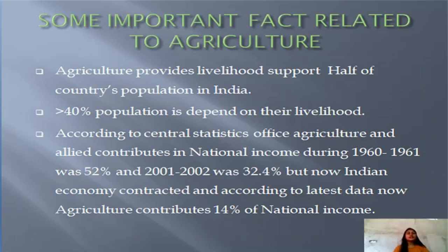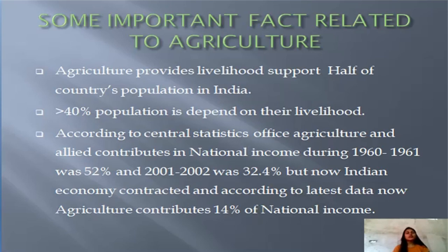Some important facts: agriculture provides livelihood support to half the country's population in India, and more than 40 percent of the population depends on it for their livelihood. According to the Central Statistics Office, agriculture and allied activities contributed 52 percent to national income in 1960-61 and 32.4 percent in 2001-02, but now agriculture contributes 40 percent of national income.